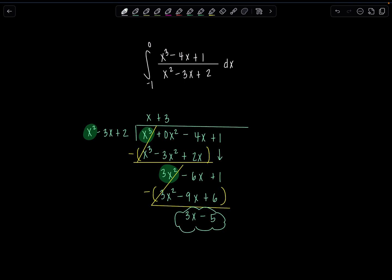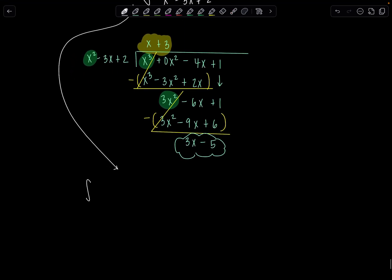So then we can go back, write the original integral as the quotient, x plus 3, plus remainder over divisor. So now we have integral negative 1 to 0, x plus 3 plus 3x minus 5 over x squared minus 3x plus 2 dx. How are we doing? You know what's bothering me? These parentheses are not the same size. There we go.